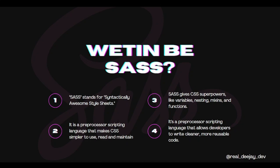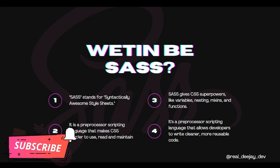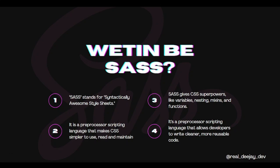SAS gives your CSS some kind of superpower — it makes it stronger. It gives you variables, even though you already get custom properties in CSS. It also allows us to nest our code, which is one of the most popular things about SAS. We also get mixins, which let you take a block of code, package your styles, and reuse them. You also get functions, loops, and other features because SAS is a preprocessor scripting language.